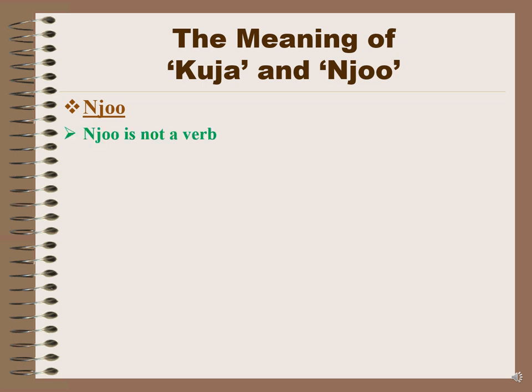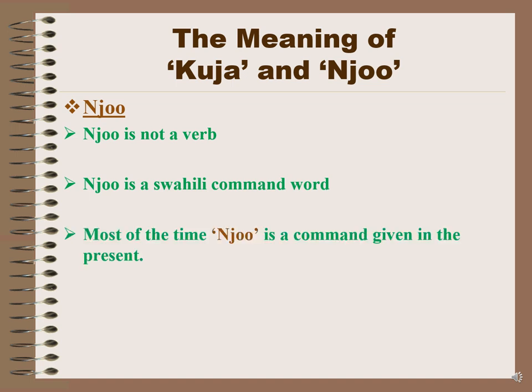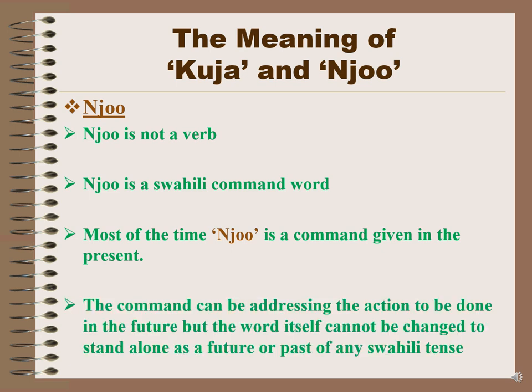Joo is not a verb. Joo is a Swahili command word. Most of the time, joo is a command given in the present. Despite the fact that the command can be given in the present, it can address an action to be done in the future, but the word itself cannot be changed to stand alone as a future or past of any Swahili tense.